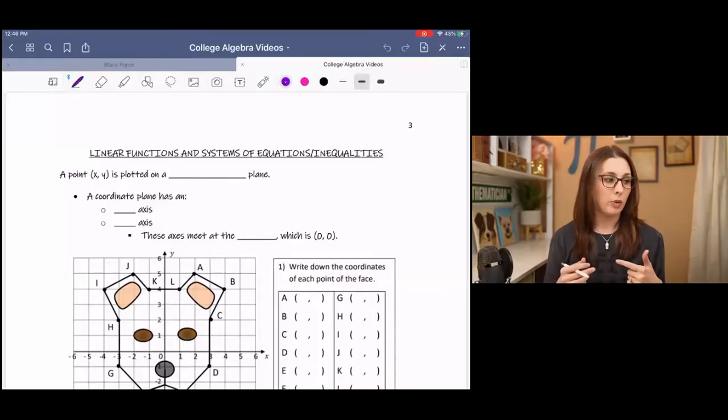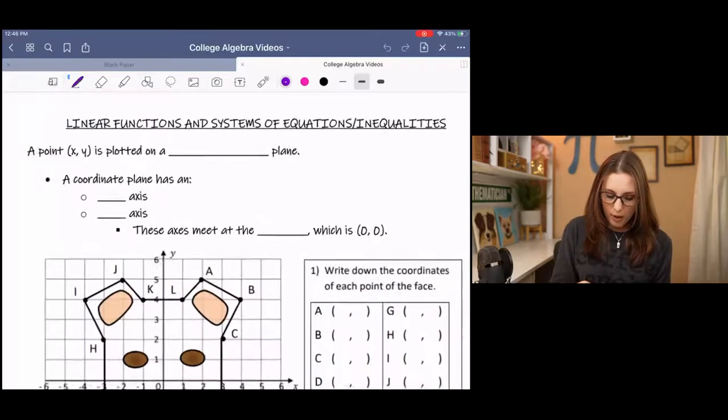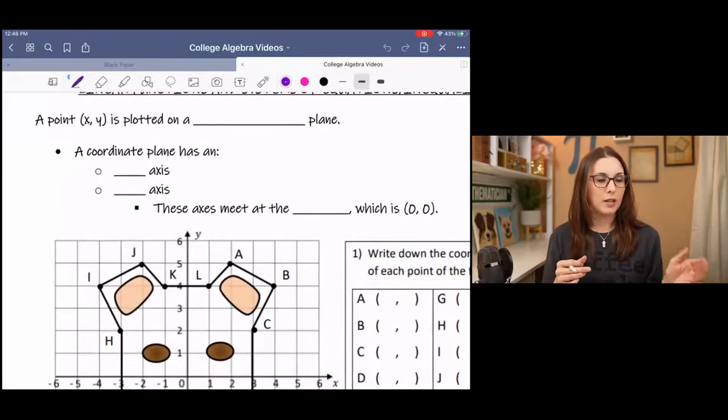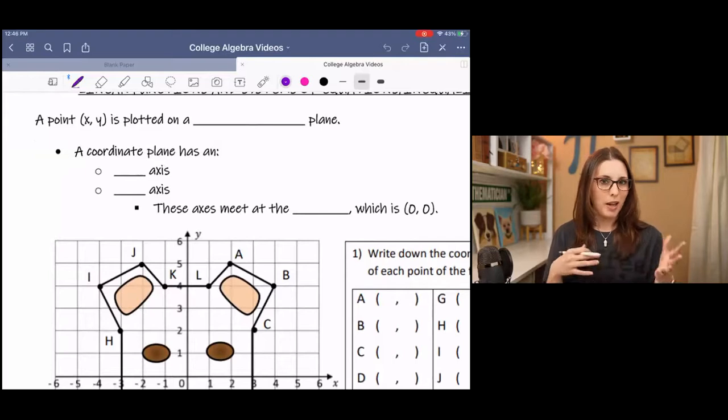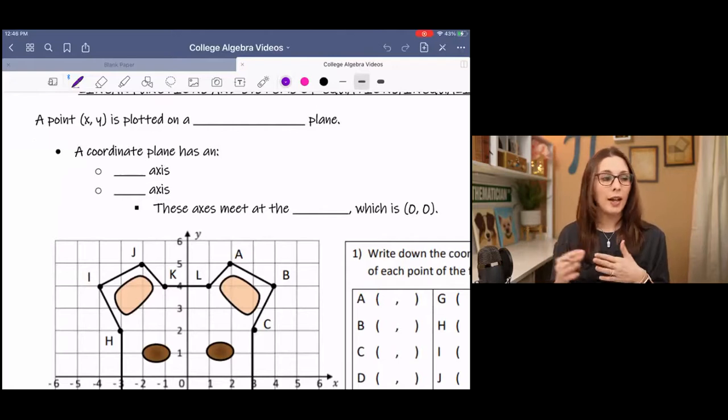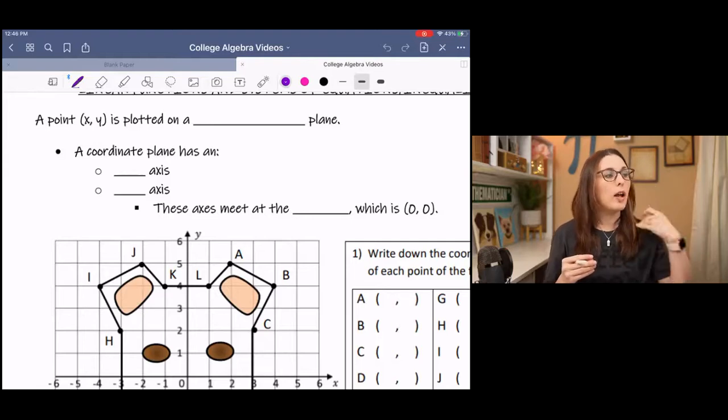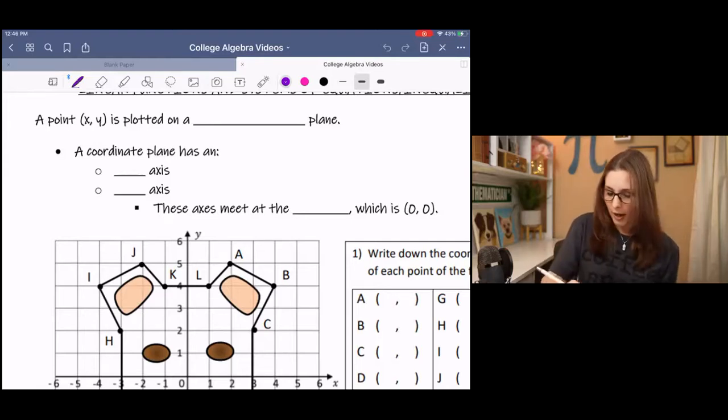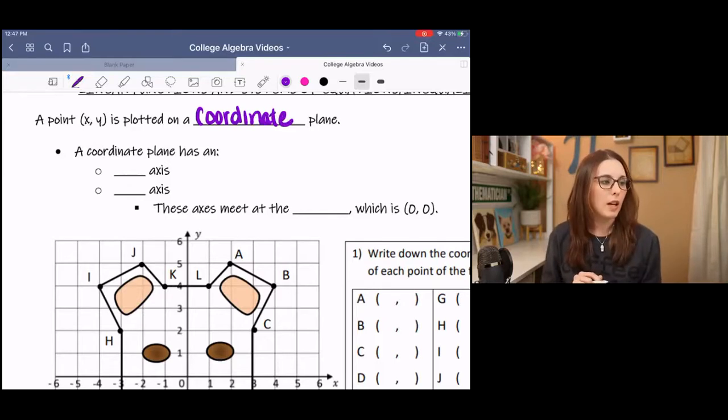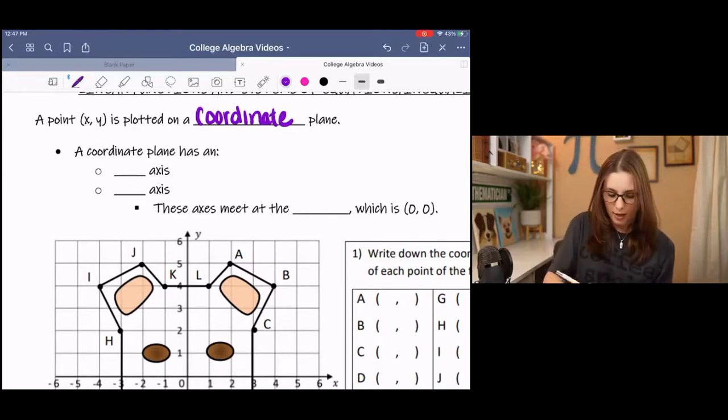Before we get into x and y intercepts, I want to first review you on plotting points and the coordinate plane. A point is written usually as x comma y. It might be a and b or c and d, but typically we use x and y, and x always goes first when you're writing a point. So a point is plotted on a coordinate plane, and a coordinate plane has, coincidentally, an x-axis and a y-axis.